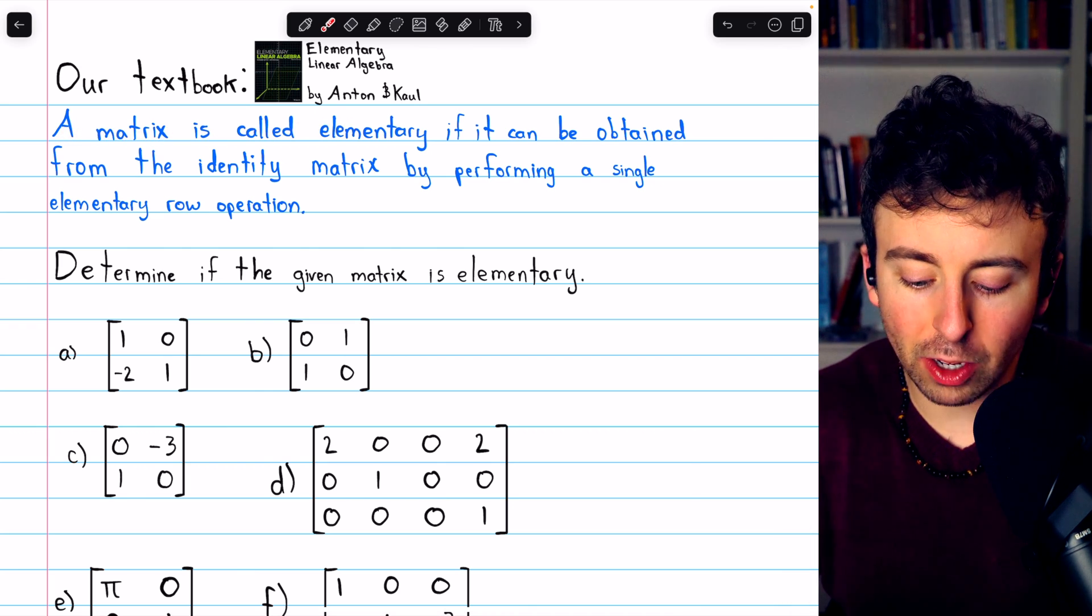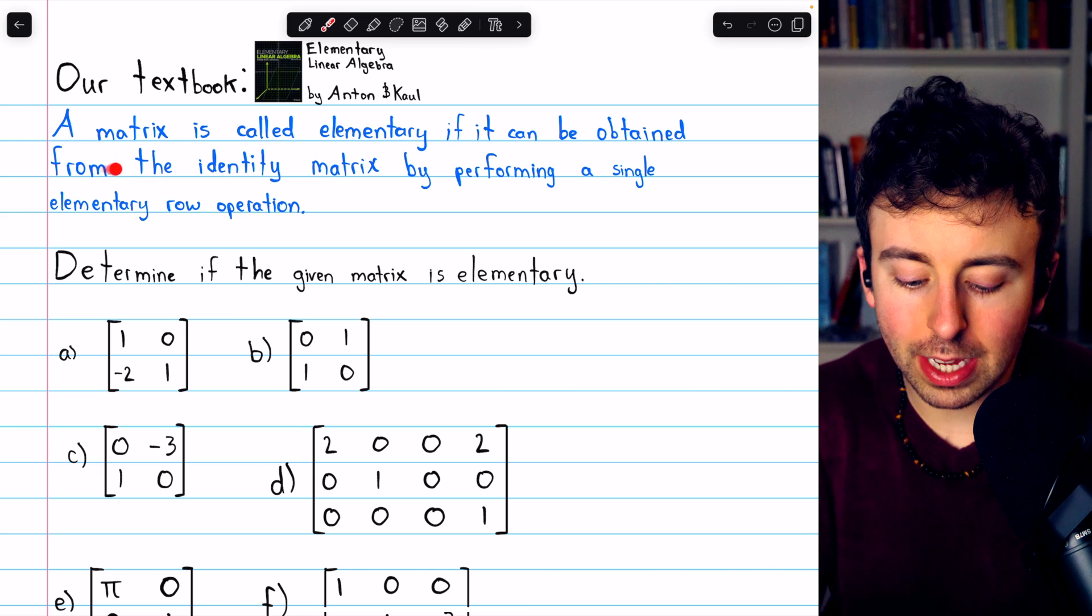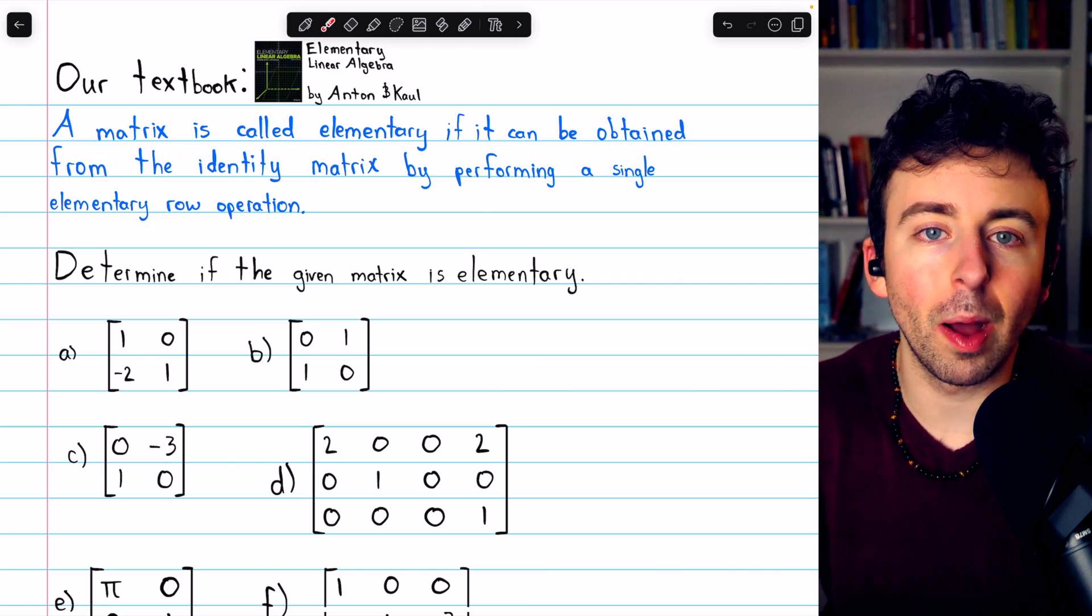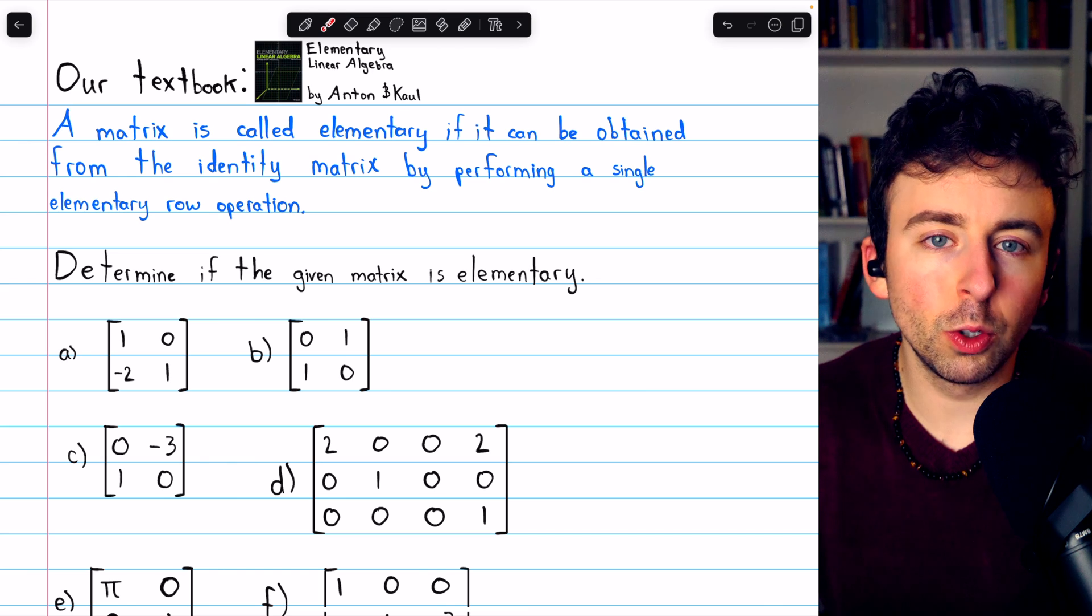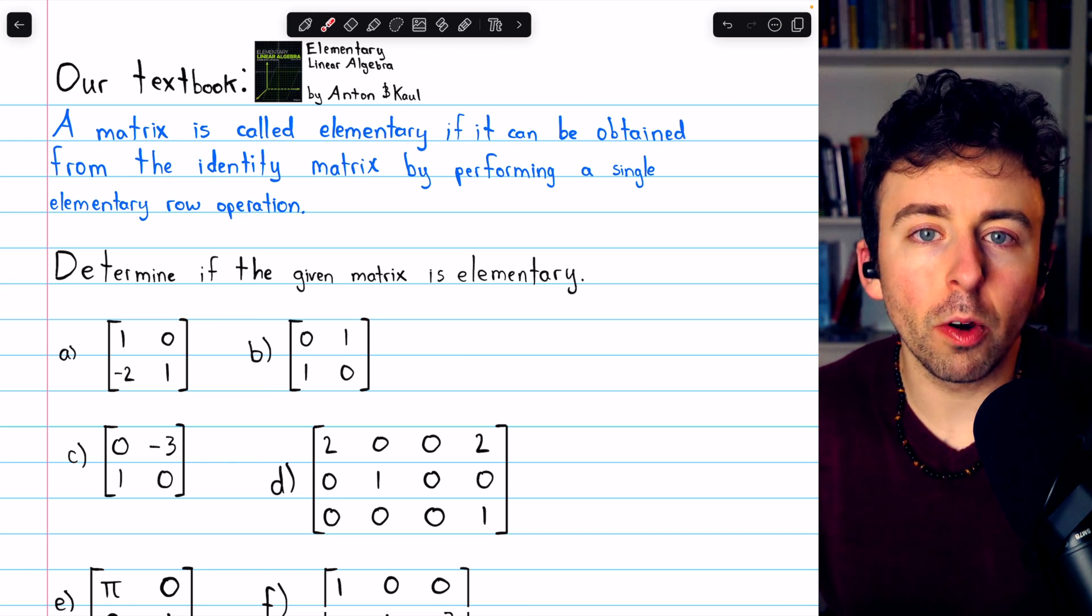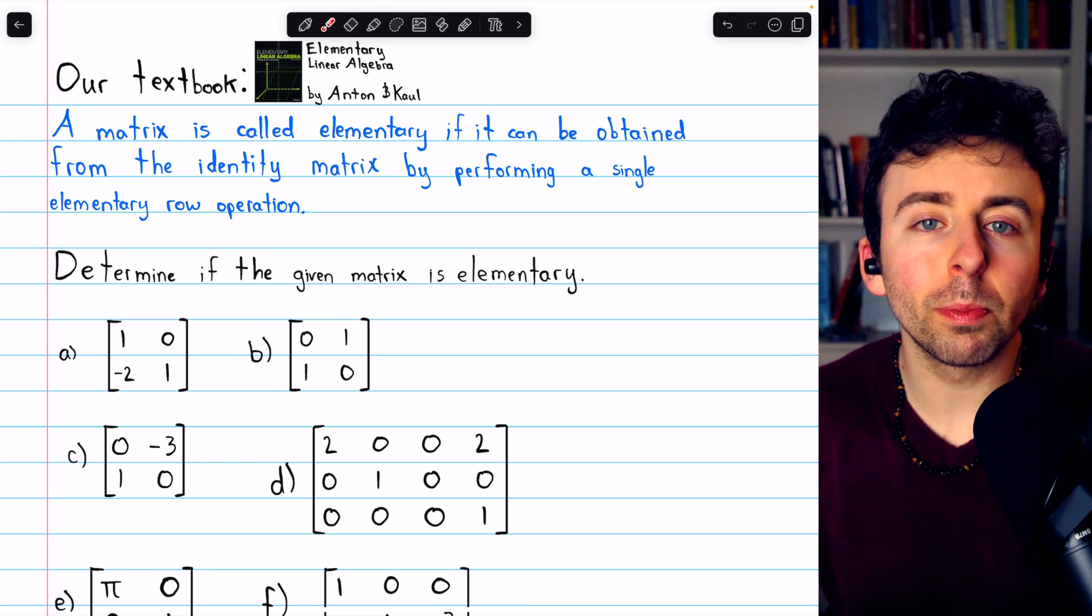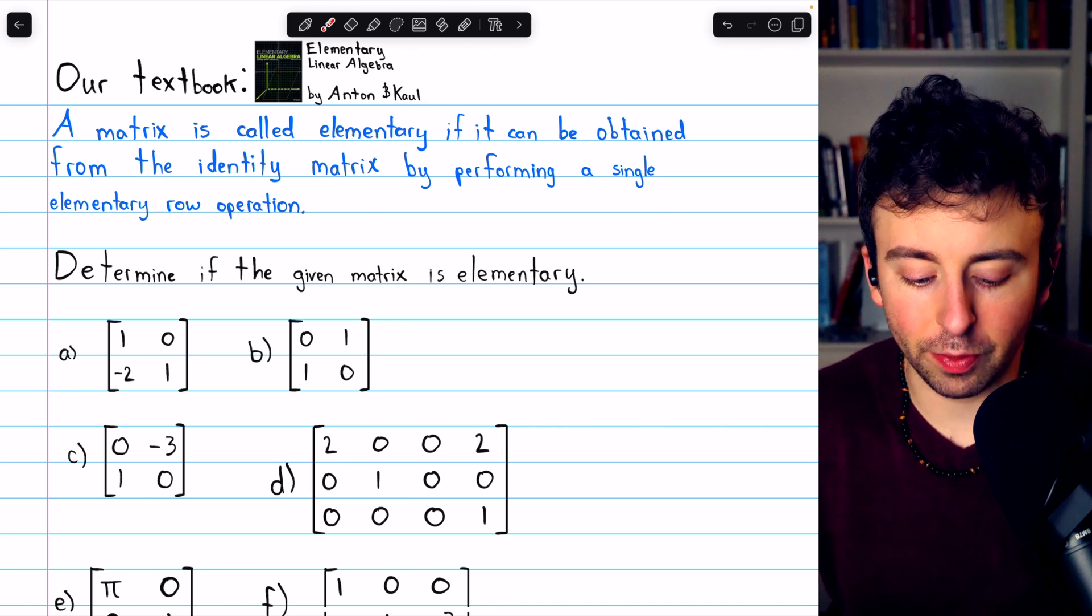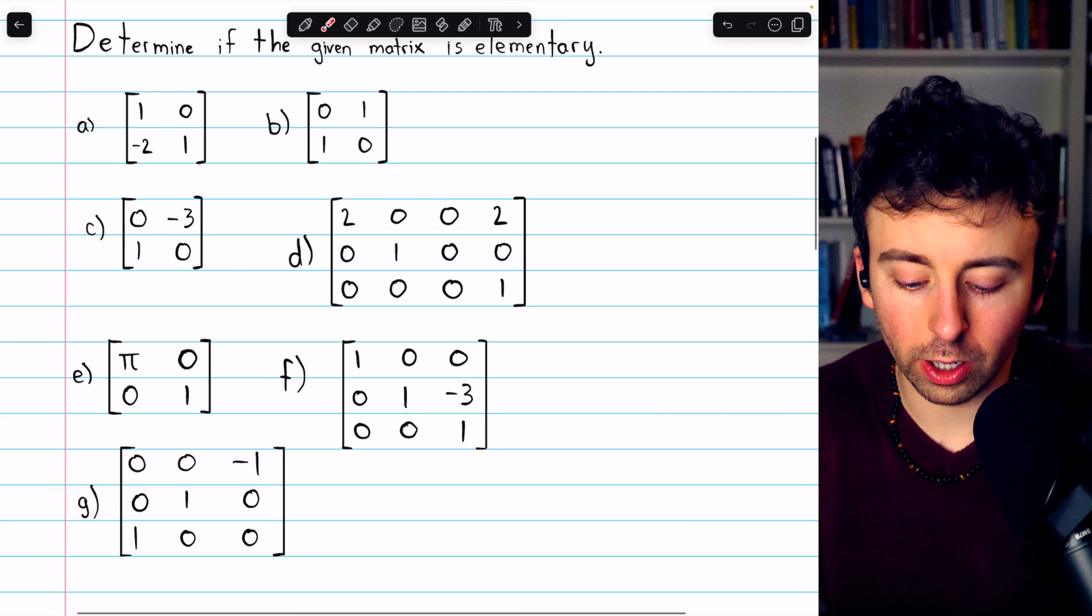We say that a matrix is elementary if it can be obtained from the identity matrix by performing a single elementary row operation. Either swapping two rows, multiplying one row by a constant, or adding a multiple of one row to another. So let's take a look and determine if each one is elementary or not.